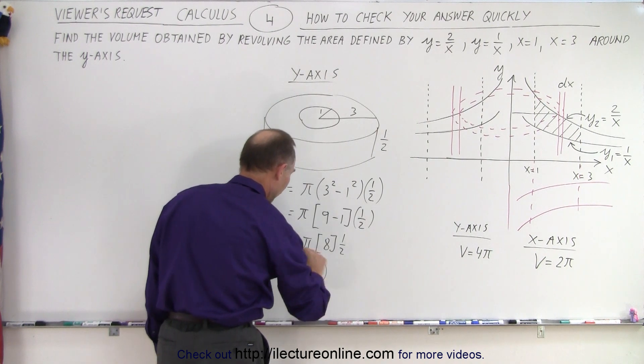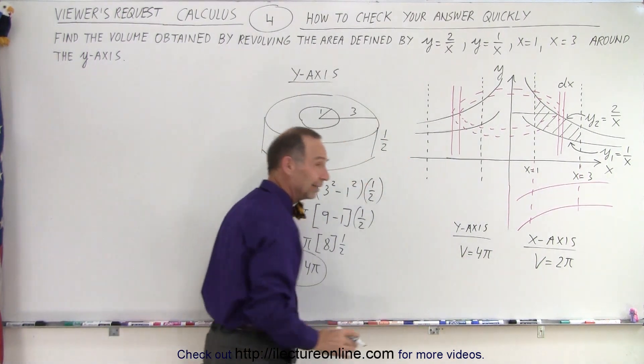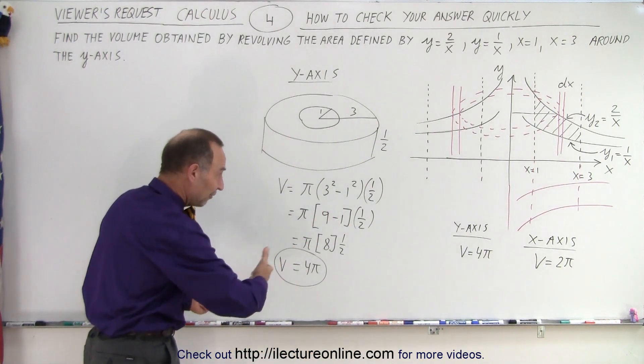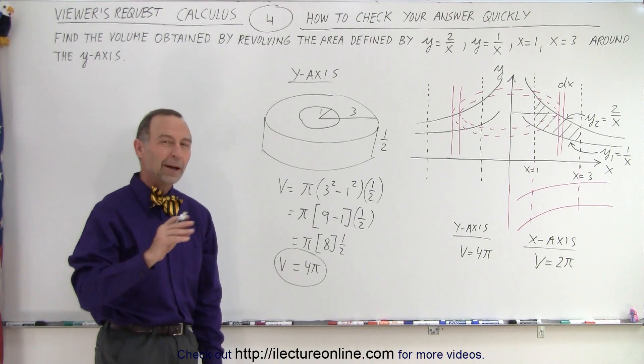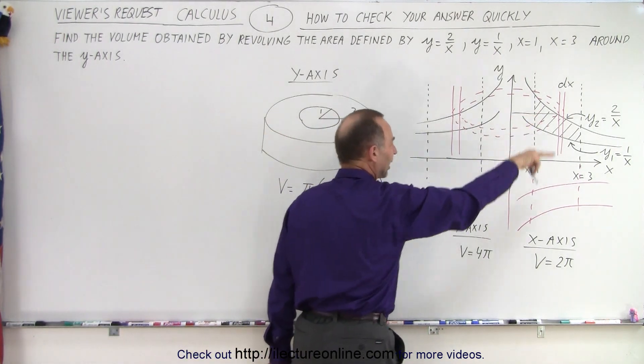And notice, our quick approximation of volume is exactly the same as the one that we calculated. Now, that just happened to be by chance, but at least it gives you the feel that you're close and that you probably did it correctly. How about if we do it in this direction, around the x-axis?